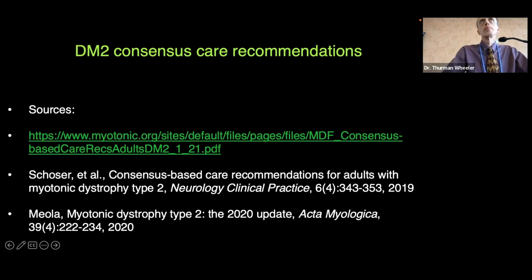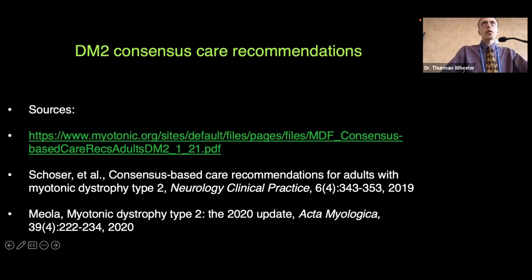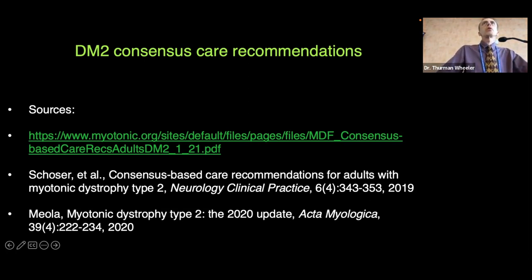Q (virtual): How many people have DM2 compared to DM1? A: That is unknown and difficult to know for sure. It's probably less common, and the milder symptoms lead to more individuals with the DM2 repeat being undetected. From what I've read, it may be approximately 90% DM1 and 10% DM2, but that could be an underestimation of DM2. In Finland, DM2 has a higher frequency than average, while in Japan it is either absent or very rare — so there's significant geographic variation.